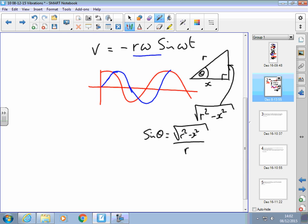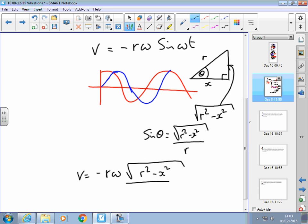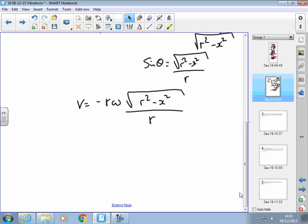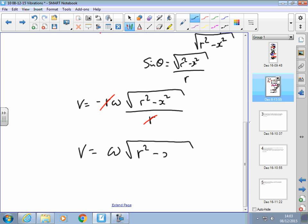So if we look back at this, and we replace sine omega t, or sine theta, with this in this function, we can write that the velocity equals minus r omega times the square root of r squared minus x squared, over r. Because that equals the sine of omega t. Oh look, r's cancel, top and bottom. So velocity equals omega square root r squared minus x squared. Another really useful formula that tells us the velocity at any particular displacement.